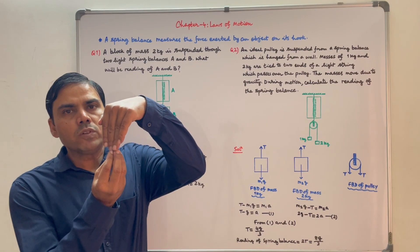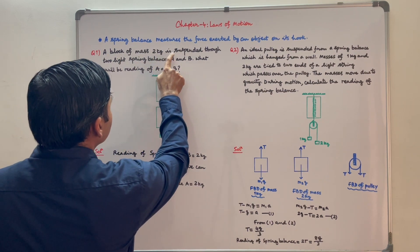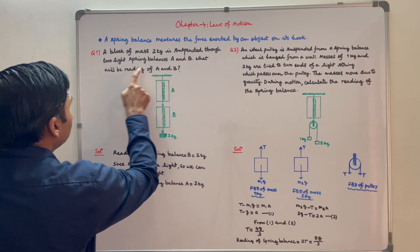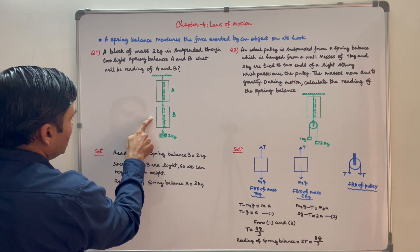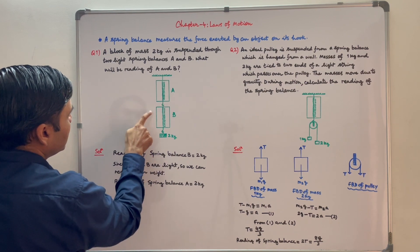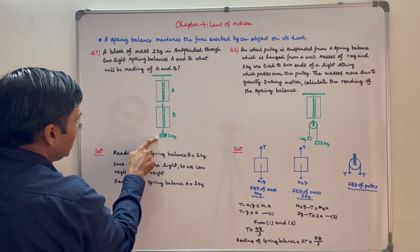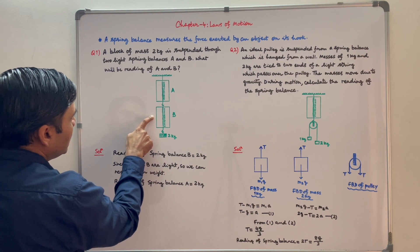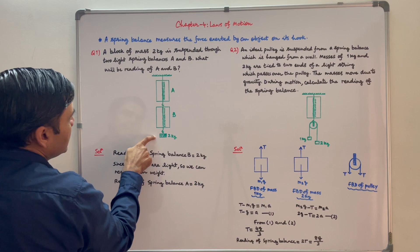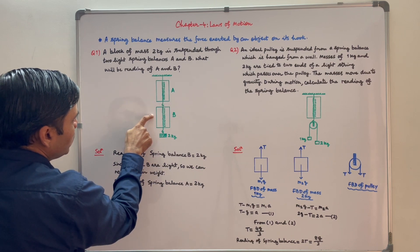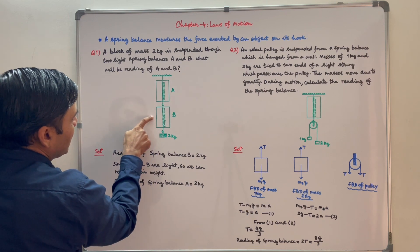A spring balance measures the force exerted by an object on its hook. Let us see a couple of questions based on it. First question: a block of mass 2 kg is suspended through two light spring balances A and B. What will be the reading of A and B? Since the spring balances are light, we can neglect their mass. The force exerted on the hook of spring balance B by the 2 kg mass will be 2g, so its reading will be 2g. Since the mass of spring balance B is negligible, the reading of spring balance A will also be 2g.